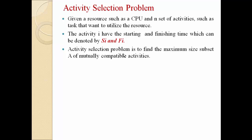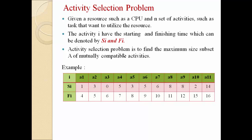To understand compatible activities, consider a list of 11 activities: a1 through a11. Every activity has a starting time and finish time. For example, activity 1 has starting time 1 and ending time 4; activity 2 has starting time 3 and finishing time 5; activity 3 has starting time 0 and finish time 6. Likewise, every activity has some fixed starting and finish time.